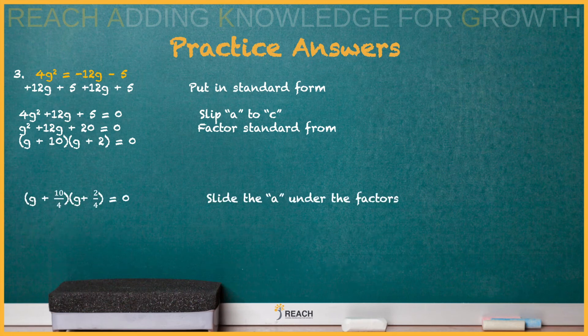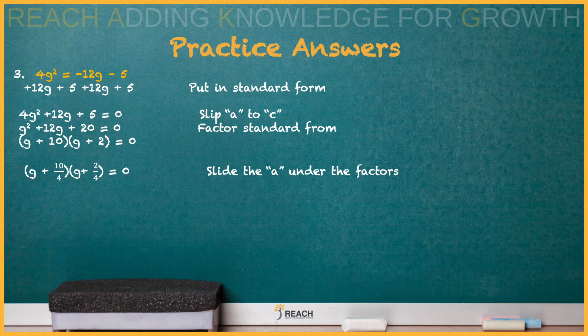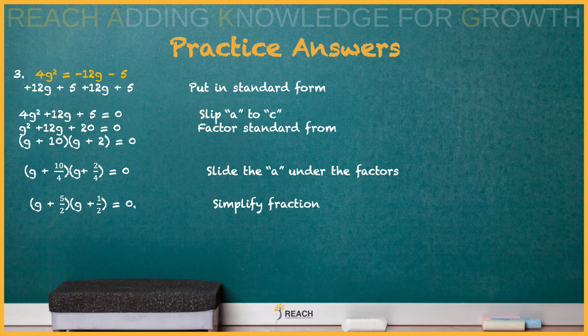You can't forget to do the slide. So we slide the 4 because that's the number we slipped under the factors. Always simplify fractions. If we wanted to factor, we would move the denominator to the front of the g. But we're solving, so you just perform that one-step equation and you get your final answer.